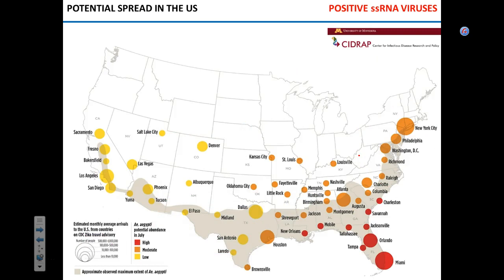A map from the University of Minnesota, produced before the Miami cases happened, shows Zika risk in the US. The red color indicates high abundance of Aedes aegypti mosquito. The circle size represents the number of people coming from Zika-endemic areas. Miami and Orlando combined are the highest risk. Cleveland is not even on the map — practically no risk — because very few people fly in from affected countries and there are no mosquitoes in sufficient numbers.